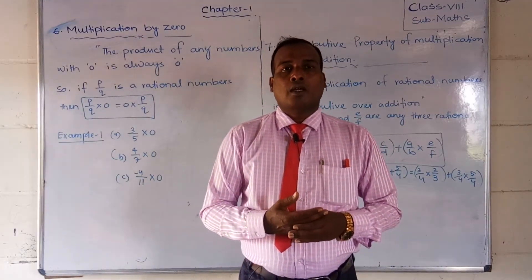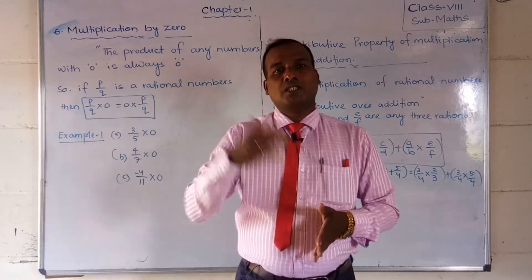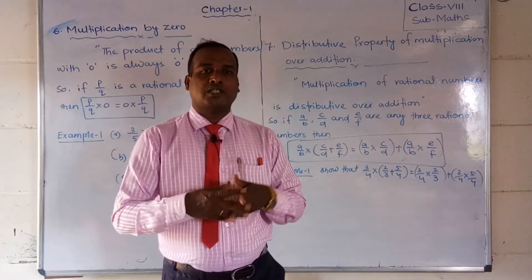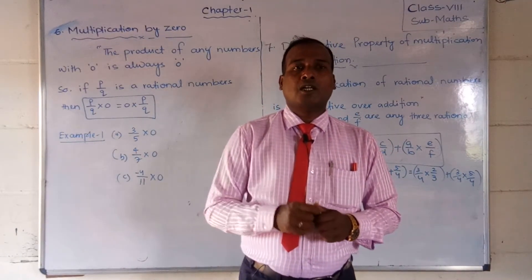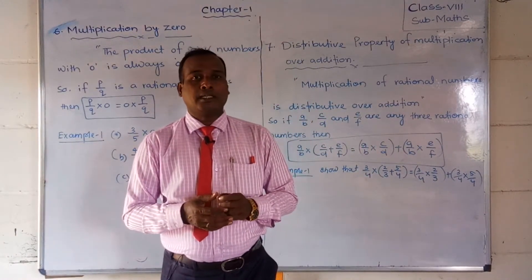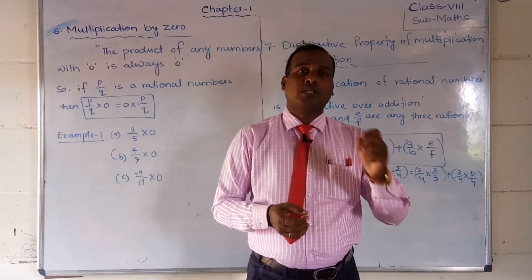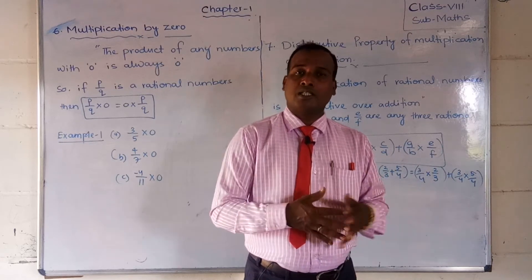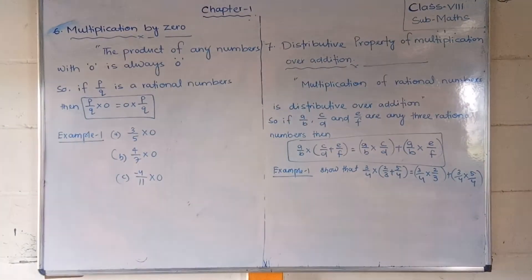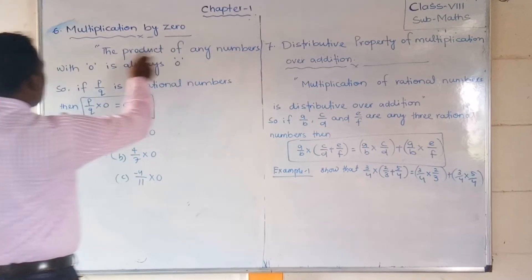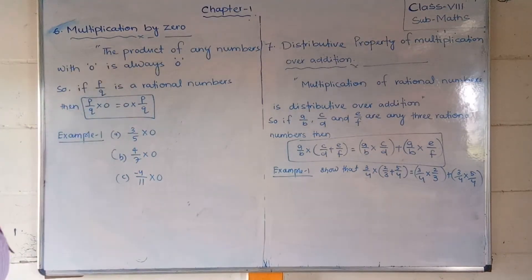When you multiply any numbers — not only rational numbers, but any numbers — with zero, the result will be zero. That is the role of zero. Any number multiplied by zero gives a product of zero. This is the sixth property: multiplication by zero. The statement is: the product of any number with zero is always zero.